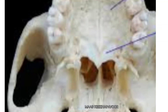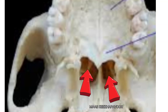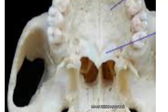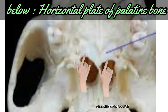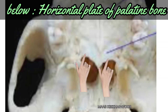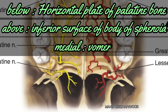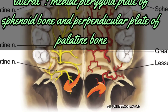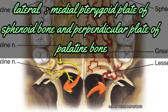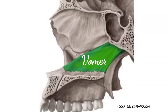Just above the posterior margin of the hard palate, two posterior nasal apertures are seen. Each aperture is bounded below by the horizontal plate of palatine bone, above by the inferior surface of the body of sphenoid, medially by the vomer, and laterally by the medial pterygoid plate of sphenoid bone and perpendicular plate of palatine bone.